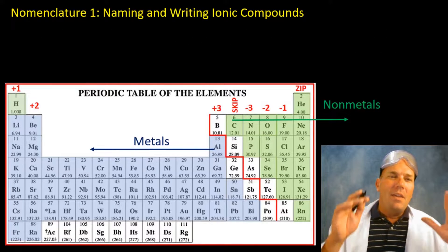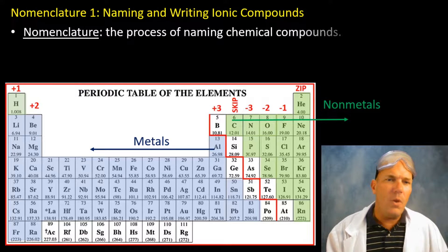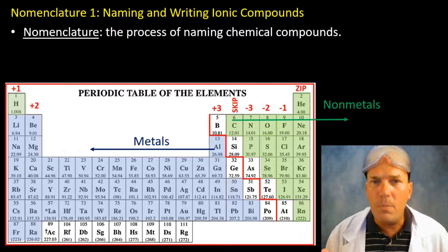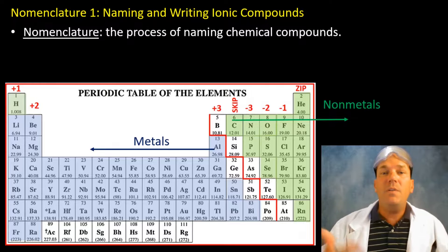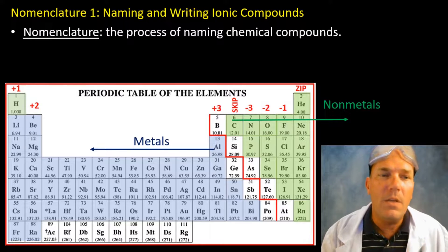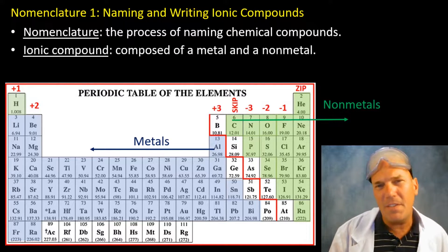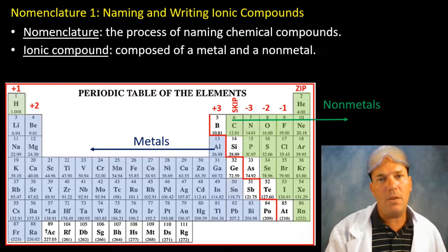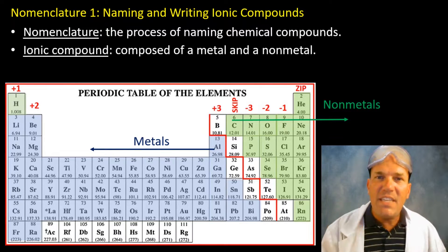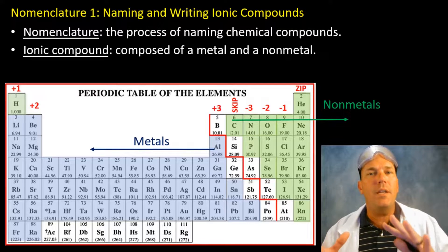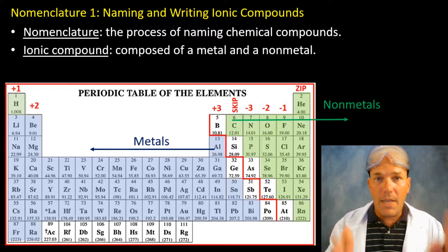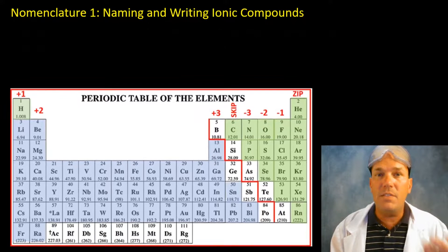Nomenclature is the process of naming chemical species — you may recall binomial nomenclature in biology, which was a naming system as well. This is a system used for naming chemical compounds. Ionic compounds specifically are composed of a metal and a non-metal, which is why it's important to be able to distinguish between metallic and non-metallic species. It's very simple: are we on the left or right of the stairs?